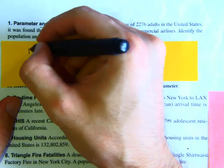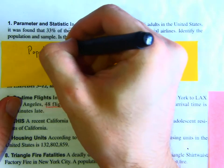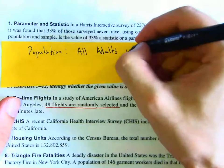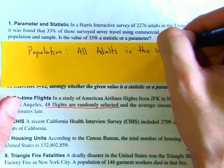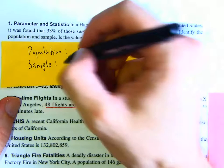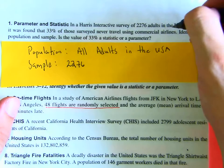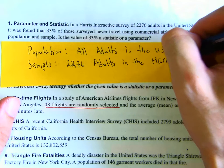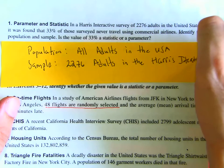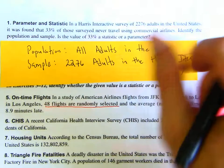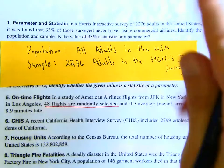For the population, it should be all adults in the United States. The sample would be the 2,276 adults in the Harris Interactive survey. Remember, the population is the big picture idea and the sample is that sub-collection within the example we have.